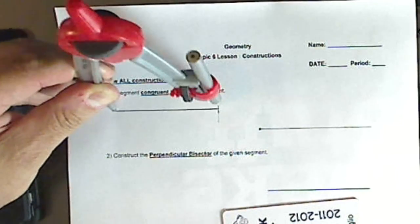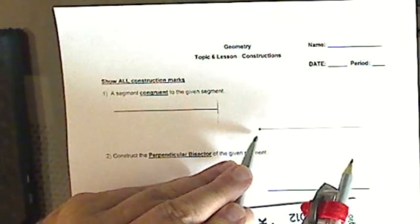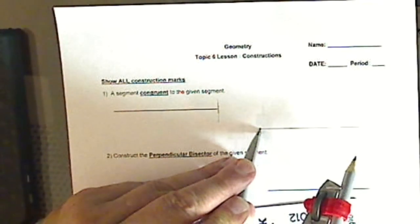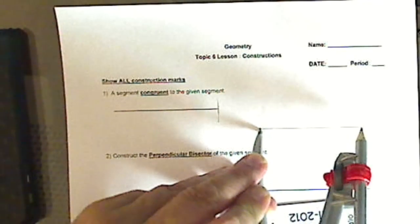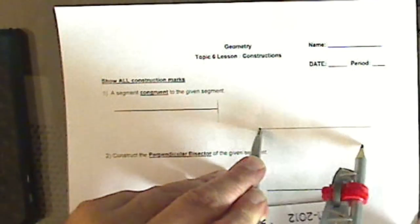Show me by marking the measurement there. Now that I know this is the length of my segment, all I have to do is put the point of my compass there, and I just do a little cross right there.